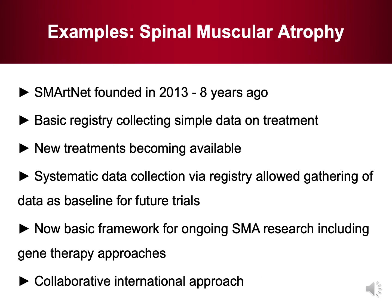A second example, again from the neuromuscular field, is spinal muscular atrophy. The SMArtNet registry was founded in 2013, eight years ago, to collect basic data on treatment. About five years ago, new treatments — gene therapy approaches for spinal muscular atrophy — became available. This systematic data collection via registry allowed the gathering of data as a baseline for future interventional trials, which is really valuable. It now forms the framework for ongoing SMA research including novel therapies. This has also been a collaborative international approach where different centers and different countries have been collecting data, all put together, which has been really successful.